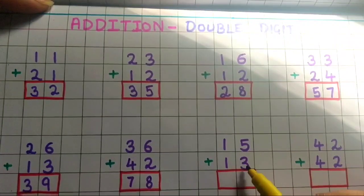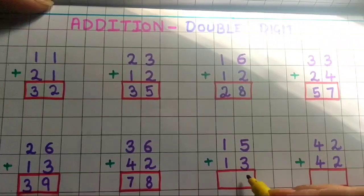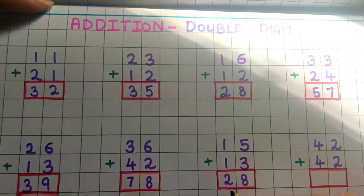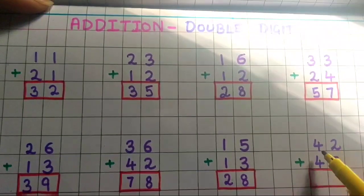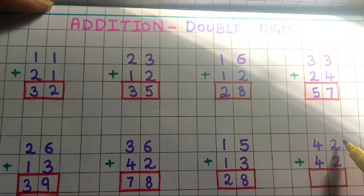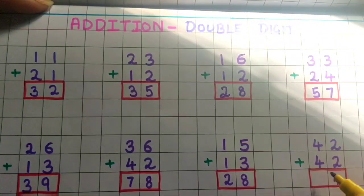15 plus 13. So 5 plus 3 is 8 children, and 1 plus 1 is 2. So the answer is 28. Now, 42 plus 42. So the addition of the ones digit: 2 plus 2 is 4. And then 4 plus 4 is 8. So the answer is 84.